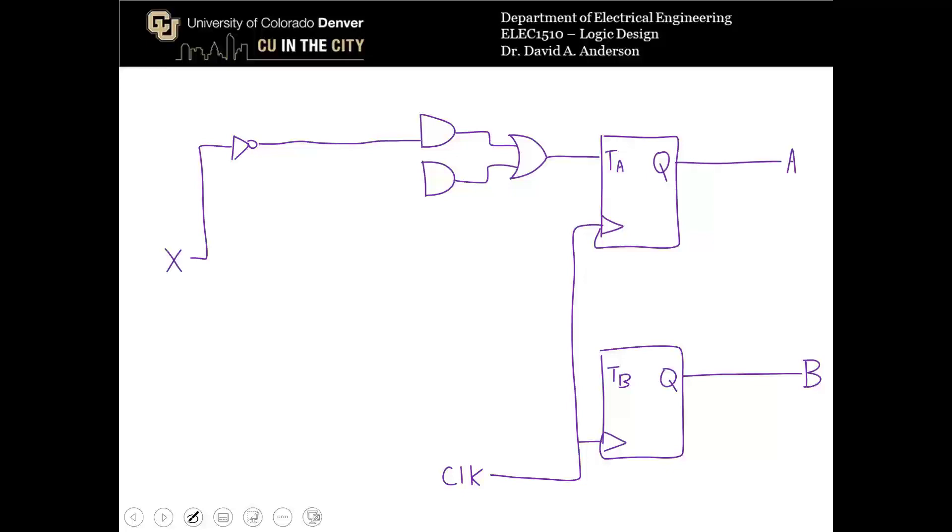And then the second input is B. So I'll draw an offshoot of B all the way up here. So there's Bx prime. And now I need A prime B. So I'll draw, well first of all, I'll connect B in there. And then A will have an offshoot into an inverter for A prime. And there I have A prime B.